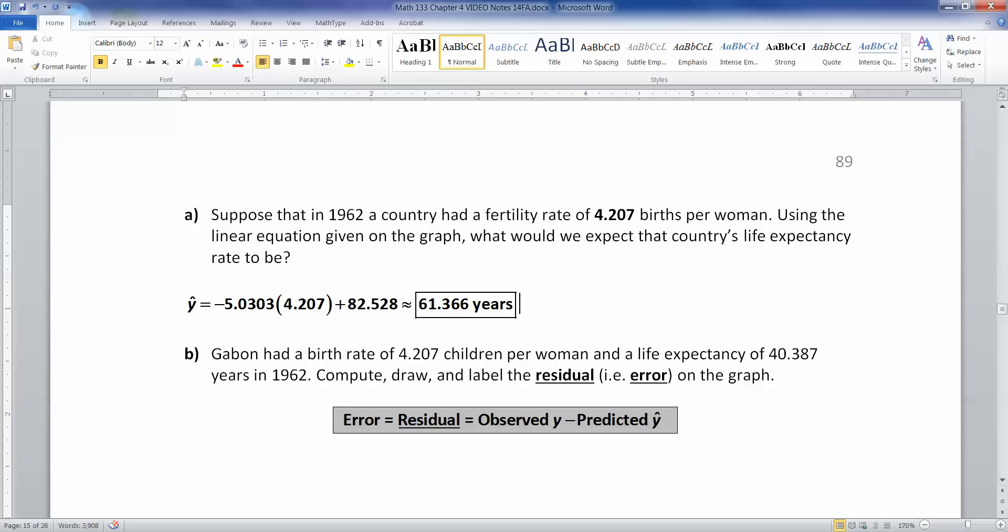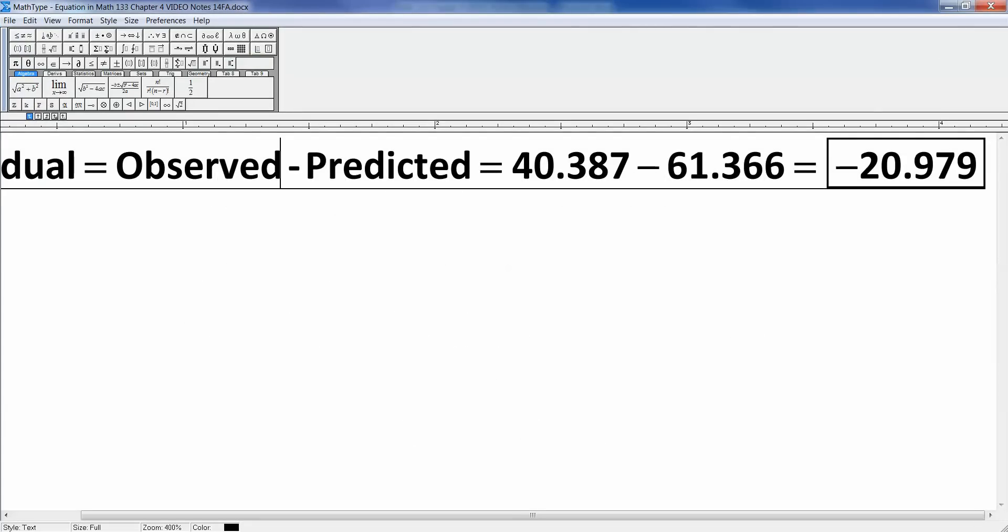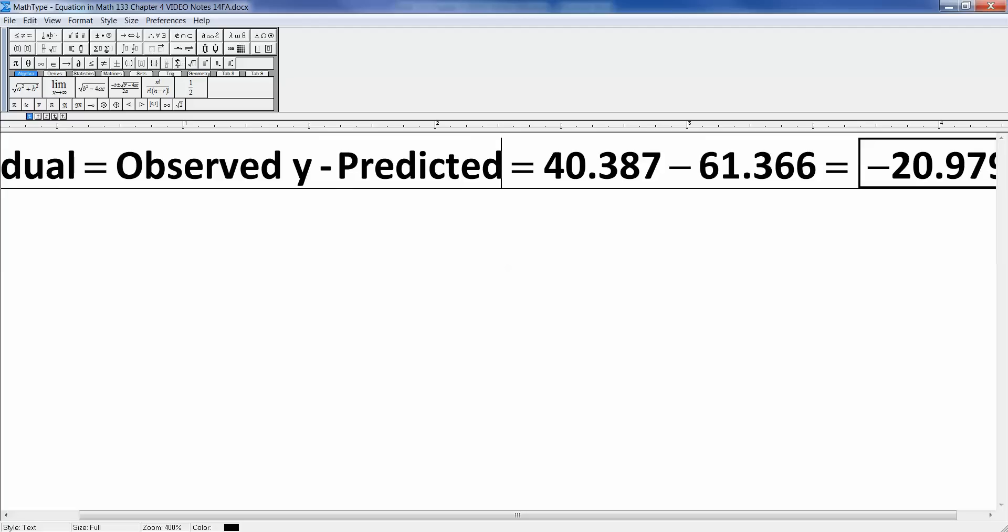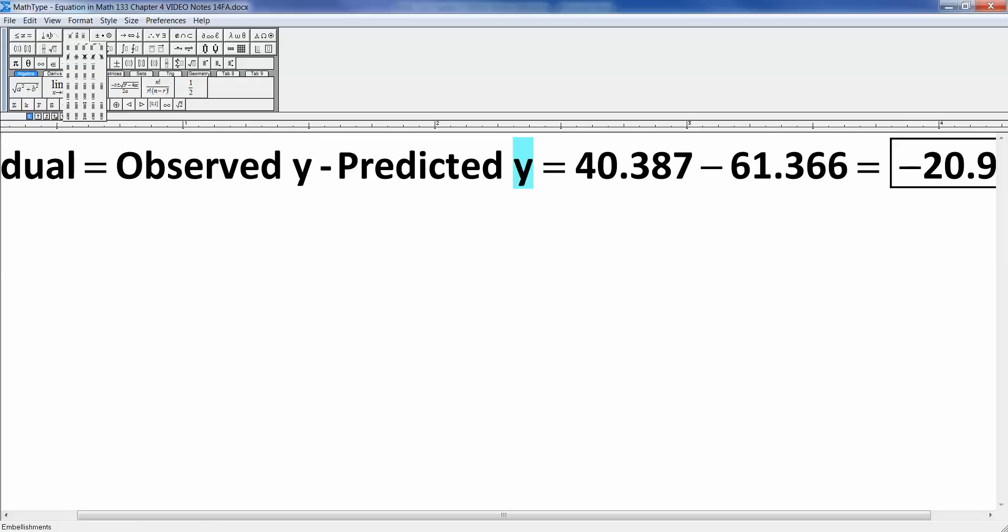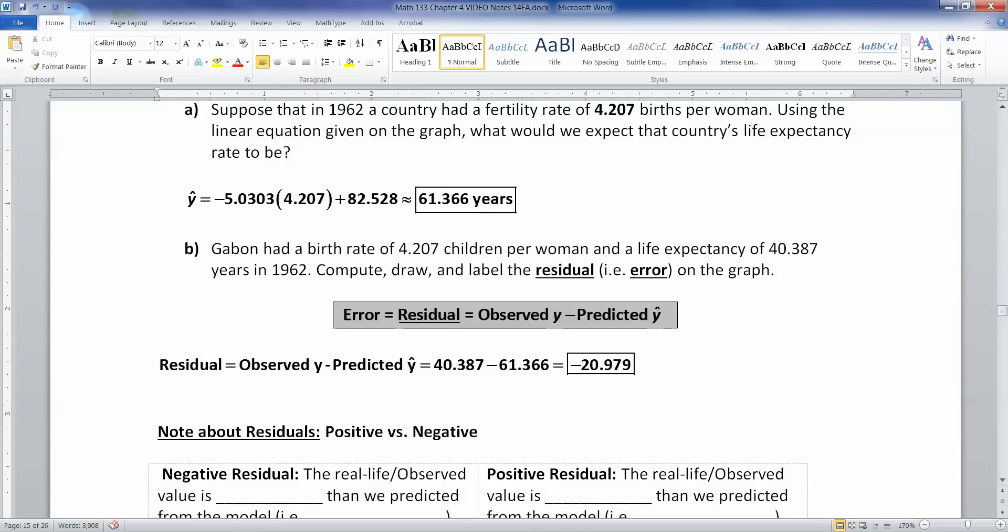All right, now Gabon, which is a country in Africa, had a birth rate of 4.207 children per woman and a life expectancy of only 40.387 years in 1962. So we're going to compute, draw, and label the residual. All right, now residual is your error, right? It's a little bit more formalized than that. It's kind of a directional error. It's always your observed y minus your predicted y hat. So we observed 40.387 in real life, but we had, so observed y minus the predicted, I'm just going to fill this in here, y hat. There it is. Okay, so we take 40.387 and we subtract away 61.366 and you get negative 20.979.